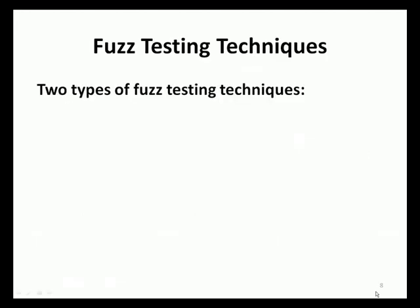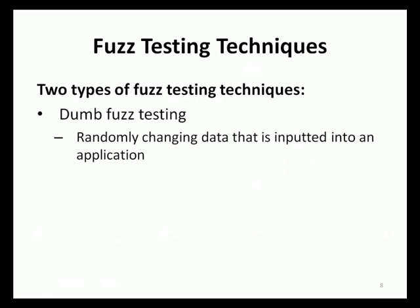There are two main methods for fuzz testing applications. The first method is called dumb fuzzing. With dumb fuzzing, completely random data is inputted into an application and the reaction of the application to the random data is observed. This type of fuzz testing may not necessarily provide useful results since most applications expect data to be in a certain format. If the malformed data is not presented in the expected data format, then the malformed data is usually rejected by the application without any detrimental impact. With that said, there is still considerable value in employing the dumb fuzzing technique, and therefore it should still be employed.